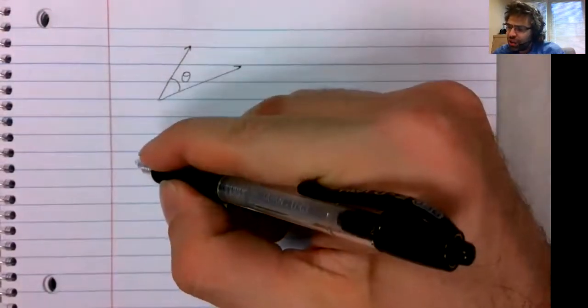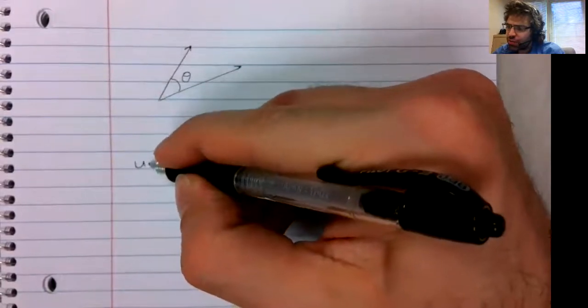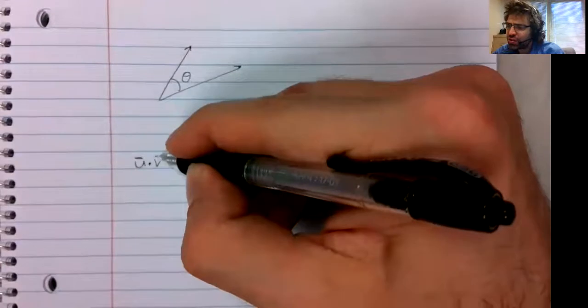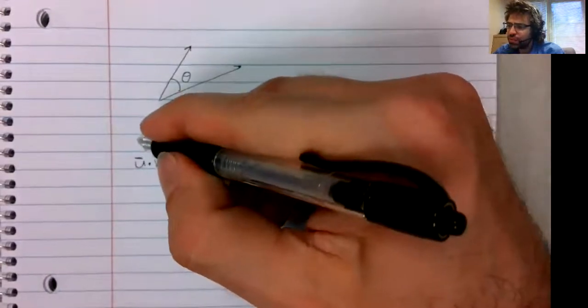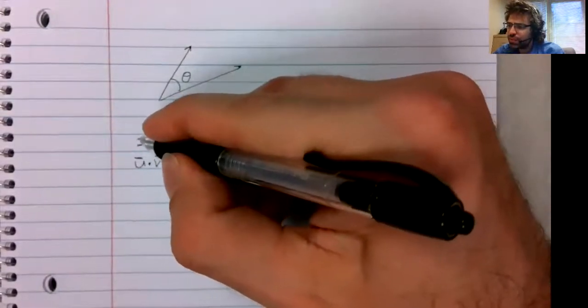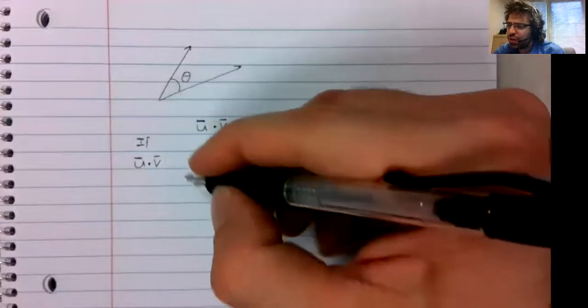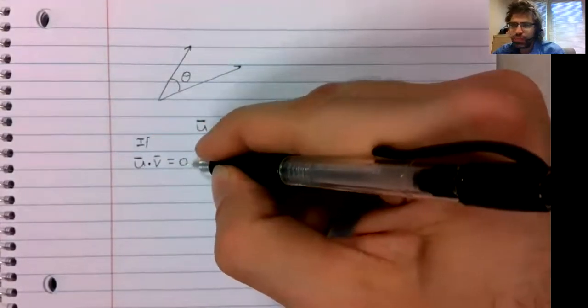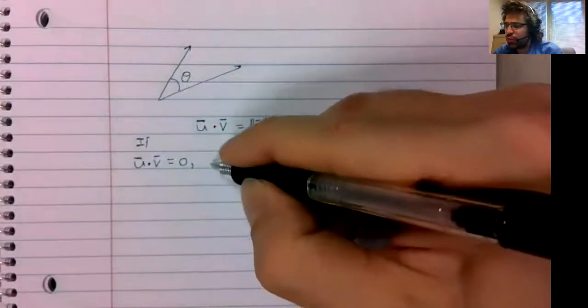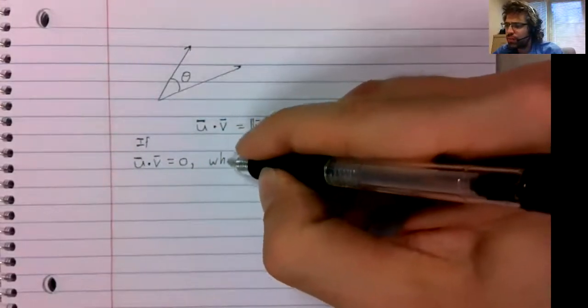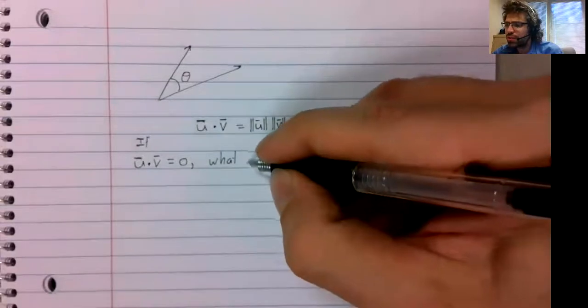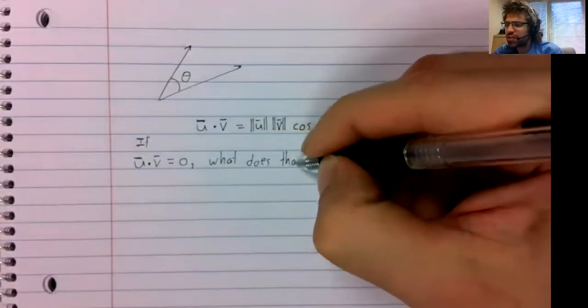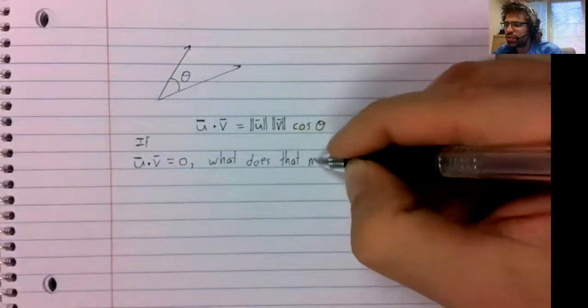What's that mean for us? It helps us answer the question: If a dot product is zero, what does that mean?